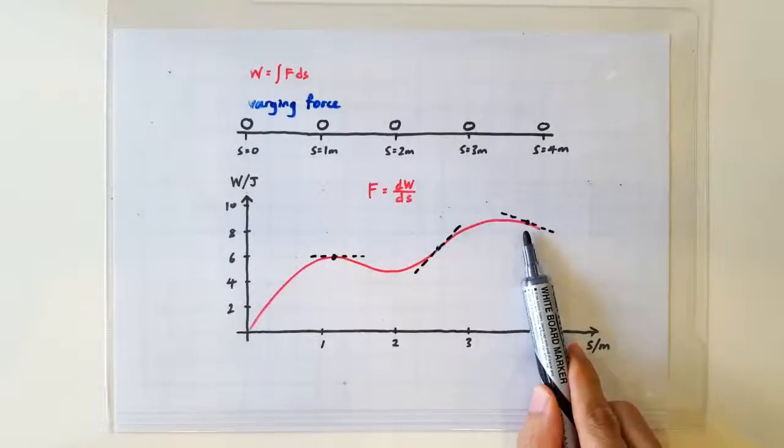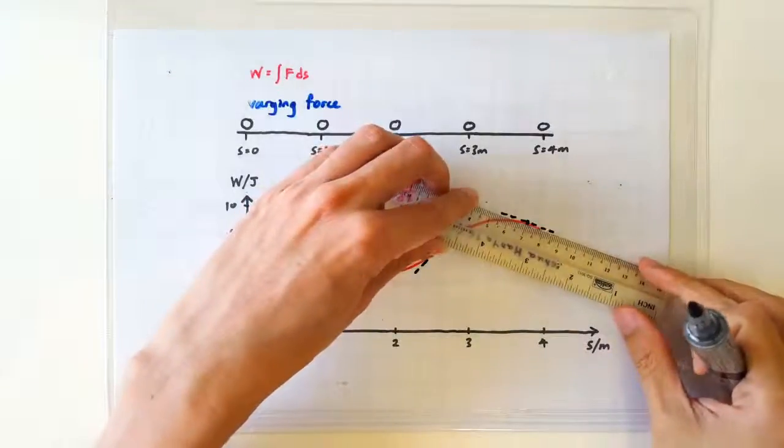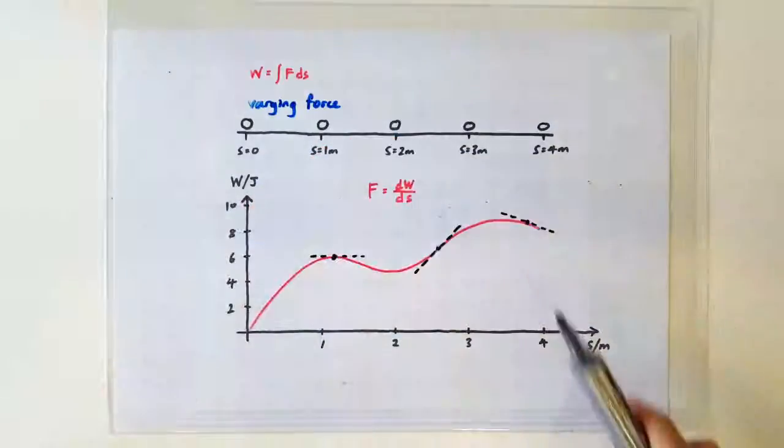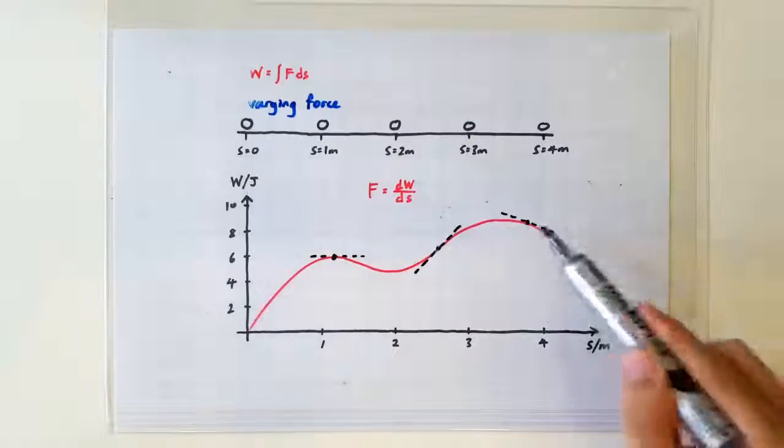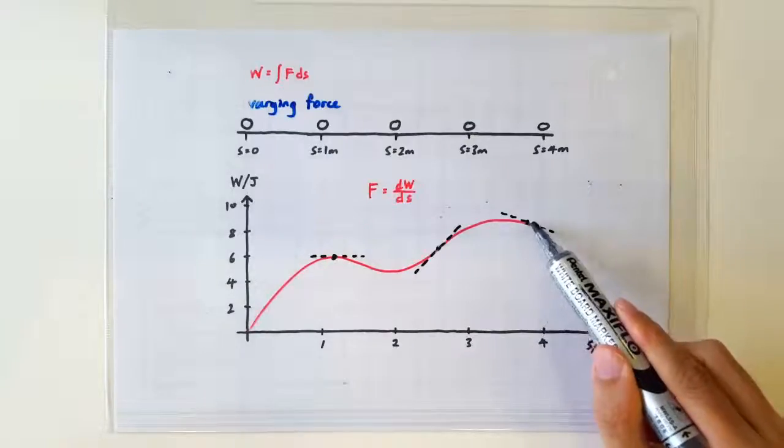Whereas at this position, the energy gradient is quite gentle, meaning the joules per meter is quite small. We know that the force acting on the mass at this position is quite small.